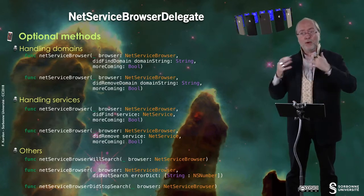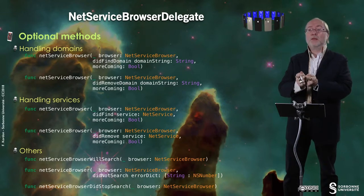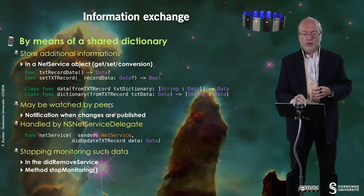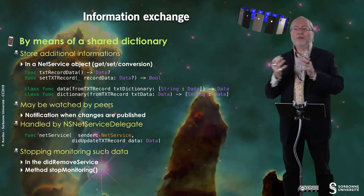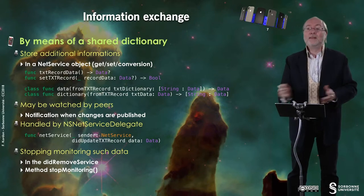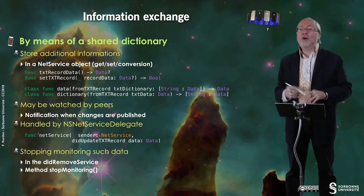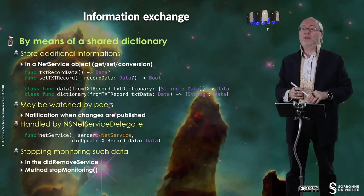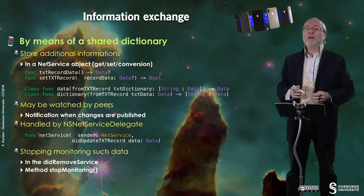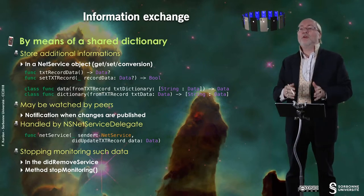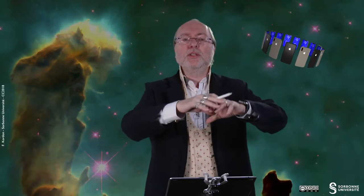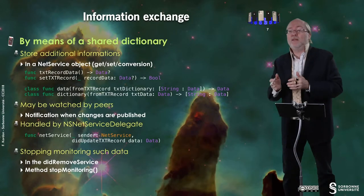Using this, you can be aware when a service appears or disappears. You do information exchange thanks to TXT record data — basically it's a dictionary. You can either get the data of a service using this method or set the TXT record of a service, and then it will be published to the other available interlocutors. You can also create a TXT record from data and vice versa. This shared information can be watched by the peers connected via Bonjour, notified every time a change is published. It's handled by the NetServiceDelegate or NSNetServiceDelegate protocol.